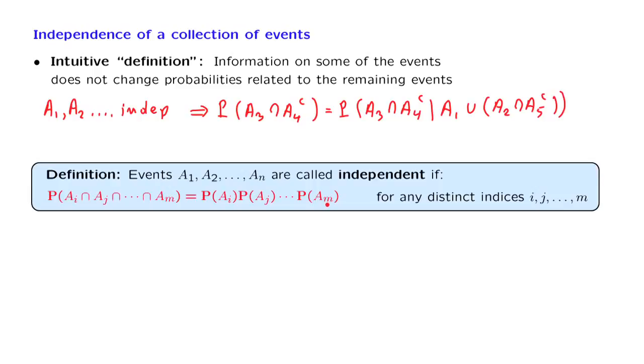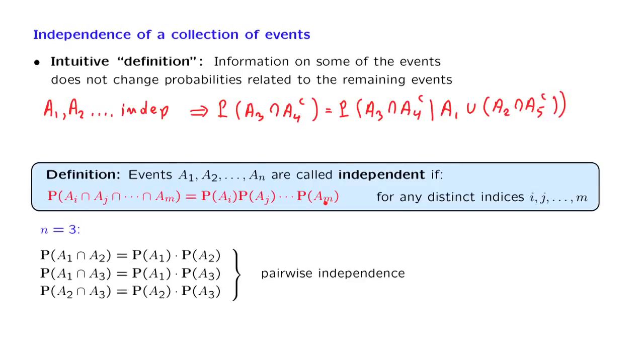Let us translate this into something concrete. Consider the case of three events, a1, a2, and a3. Our definition requires that we can calculate the probability of the intersection of two events by multiplying individual probabilities. And we would like all these three relations to be true because this property should be true for any choice of the indices.